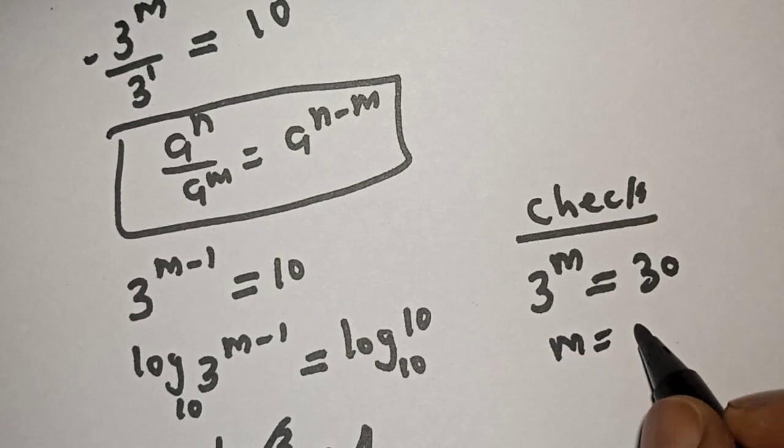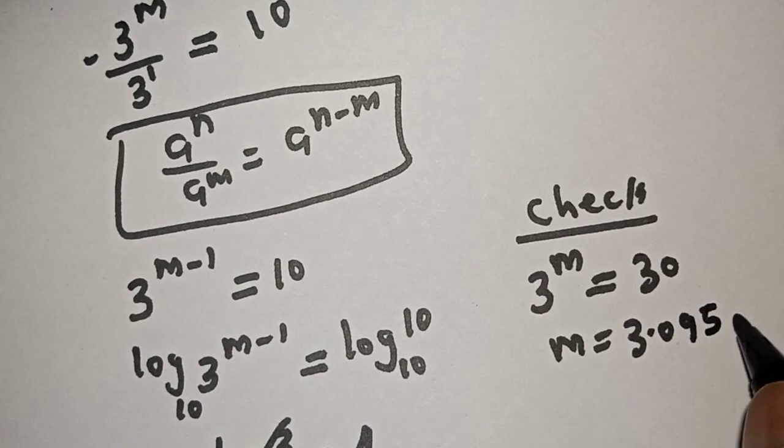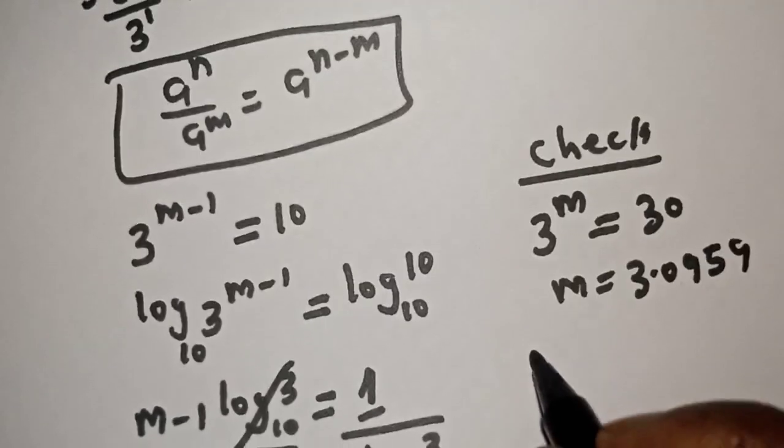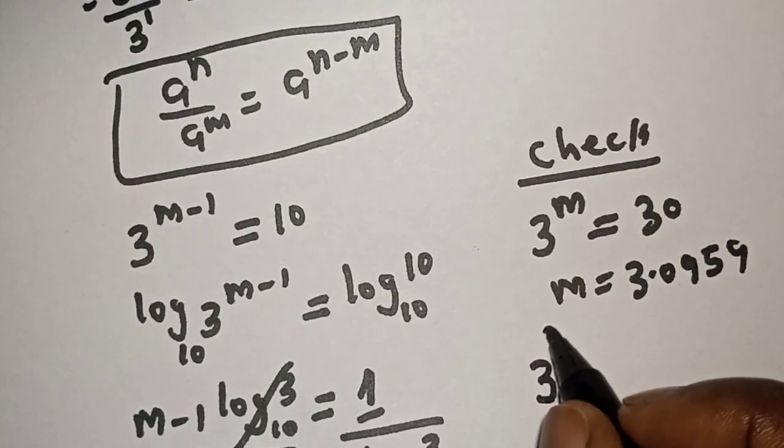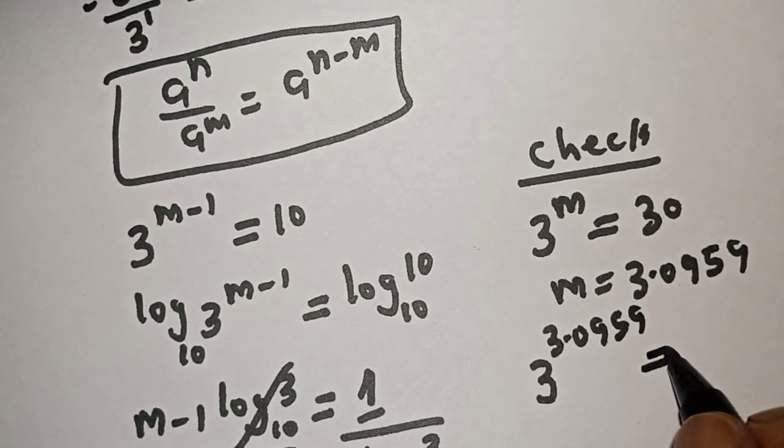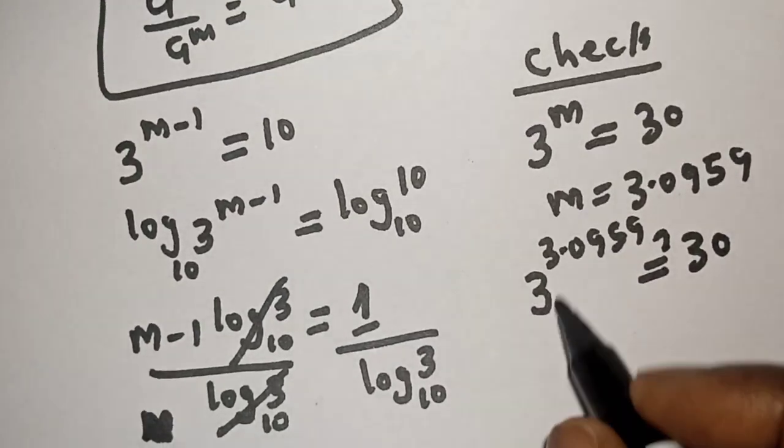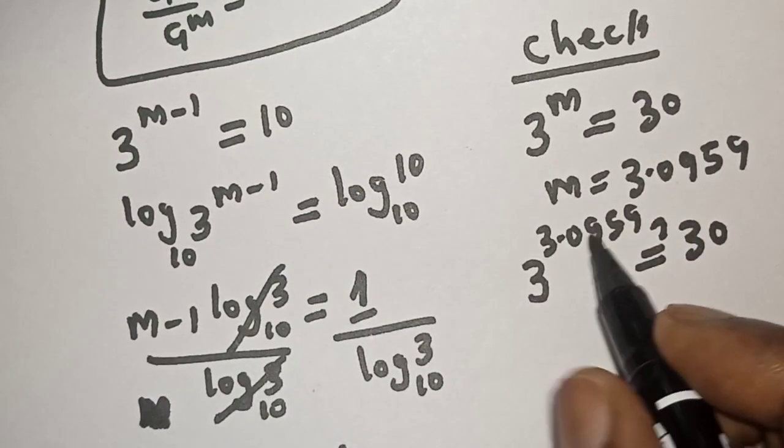m is equal to 3.0959. We have 3 raised to power 3.0959 must be equal to 30. So 3 raised to power 3.0959...